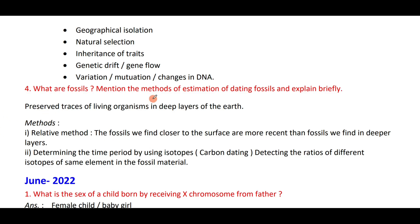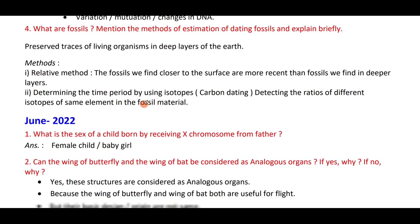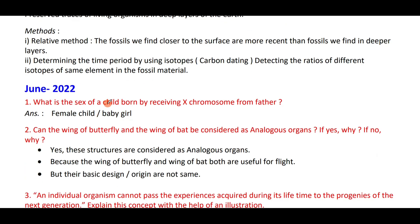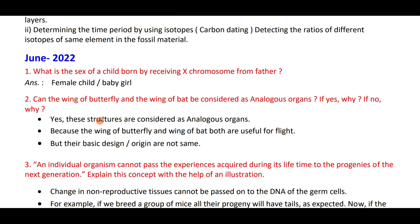What are fossils? Mention the methods of estimating and dating fossils and explain briefly. Name the sex of the child born by receiving the X chromosome from the father — it will be a female child or baby girl. Can the wings of a butterfly and wings of a bat be considered analogous? Yes, these structures are considered analogous because the wings of a bat and wings of a butterfly are both useful for flight — that is, they perform the same function — but their design and origin are not the same.